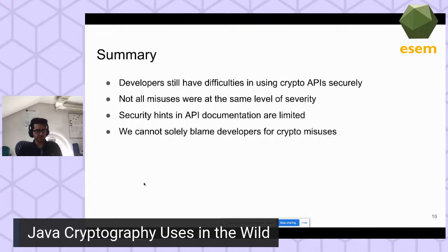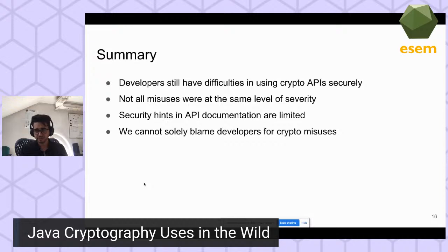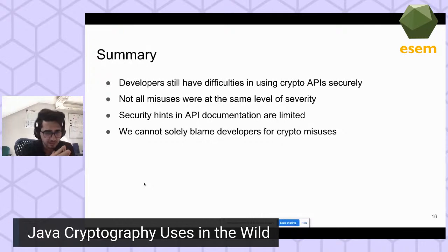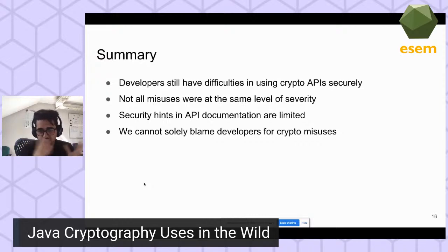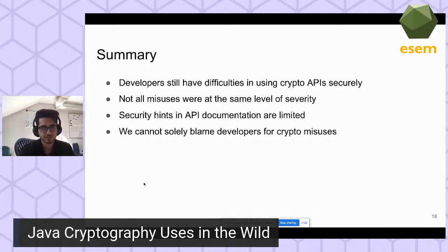The takeaway messages: developers still have difficulties using crypto APIs securely; not all misuses are at the same level of severity; security hints in API documentation are limited; and we cannot solely blame developers for crypto misuses found by static analysis tools.